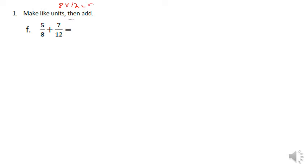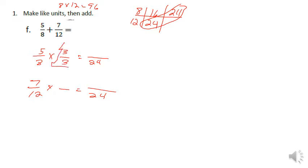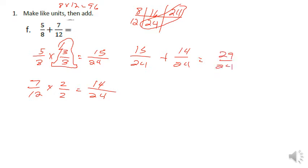If I start the smiley face method with this fraction, I would multiply eight times 12, which gives 96 — a pretty large denominator. Instead, I'll skip count: 12, 24 and 8, 16, 24 — so I have a common multiple of 24. I want to multiply by something to equal 24: eight times three is 24, so I multiply five by three to get 15. Over here, multiply by two to get 24, so multiply seven by two to get 14. Now I have 15 twenty-fourths plus 14 twenty-fourths, which equals 29 twenty-fourths.